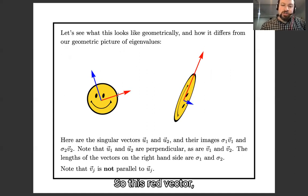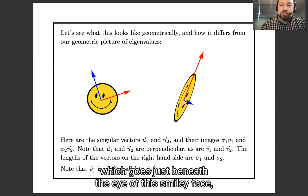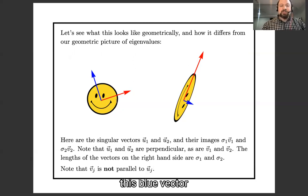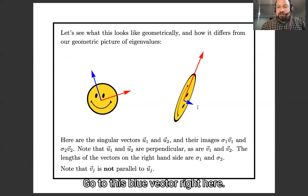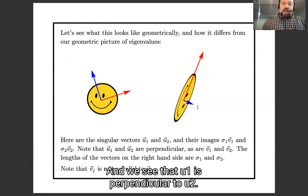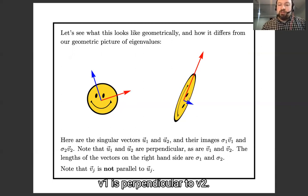Here are the singular values. Here are the singular vectors. So this red vector, which goes just beneath the eye of smiley face, goes to this red vector, which goes just beneath the eye of this smiley face. This blue vector, which shoots up over the bridge of the nose, goes to this blue vector right here. And we see that u1 is perpendicular to u2.